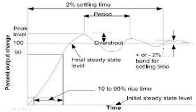Once the output reaches the linear range up to the final steady-state level, the rise time is measured from 10% to 90% of the final value. That is how we understand this step response curve.